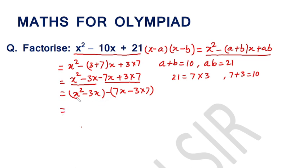Now, we can take common from these two terms x. x is common, hence this becomes x - 3. And here what we got in common? 7. Then this becomes x - 3.